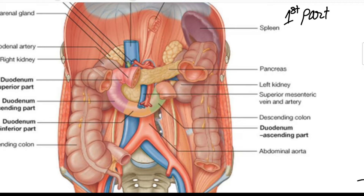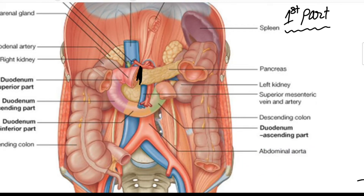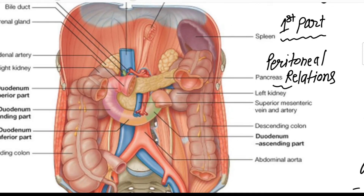Now we will see the first part in detail. The first part starts from the pylorus of the stomach, going backwards, upwards, and to the right, meeting with the second part of the duodenum. This turning point is known as the superior duodenal flexure.